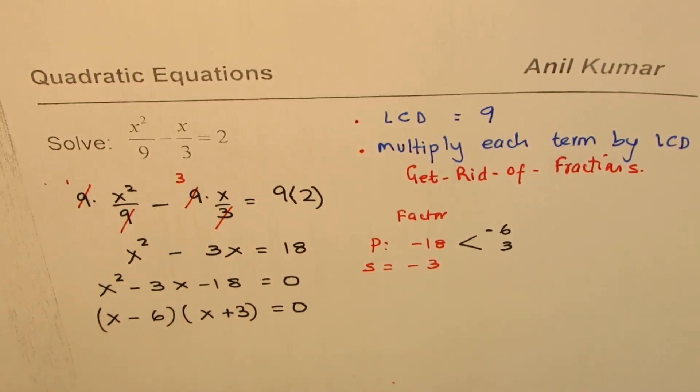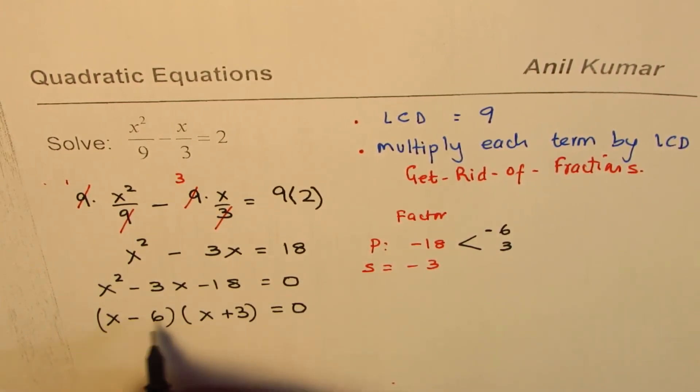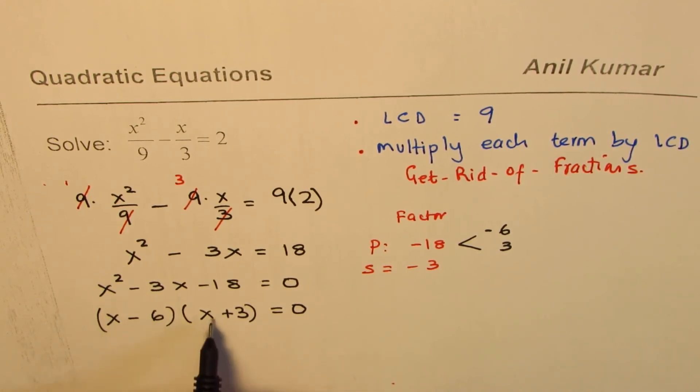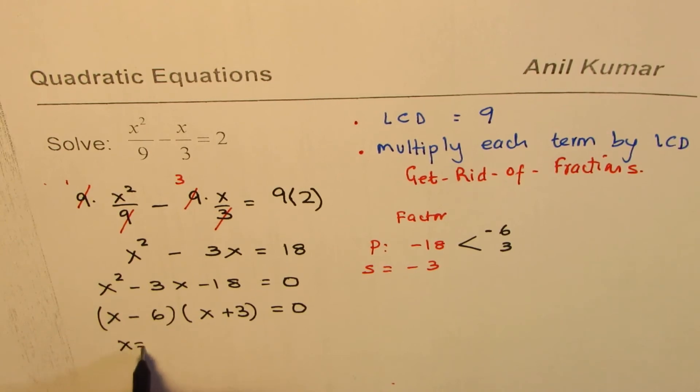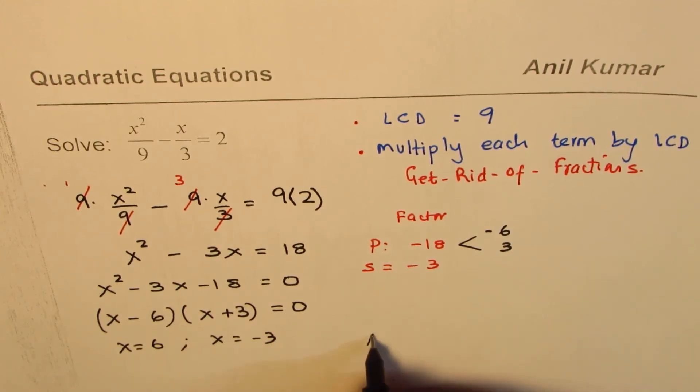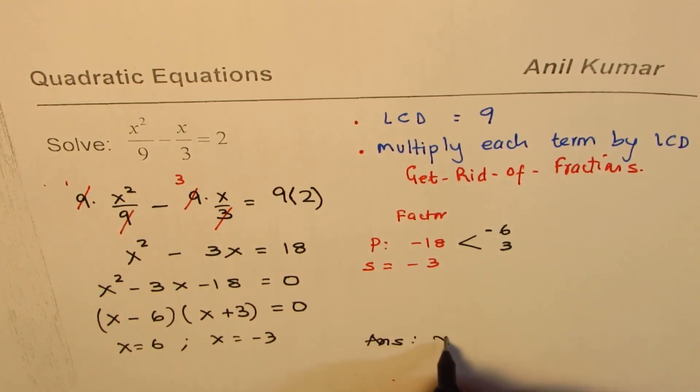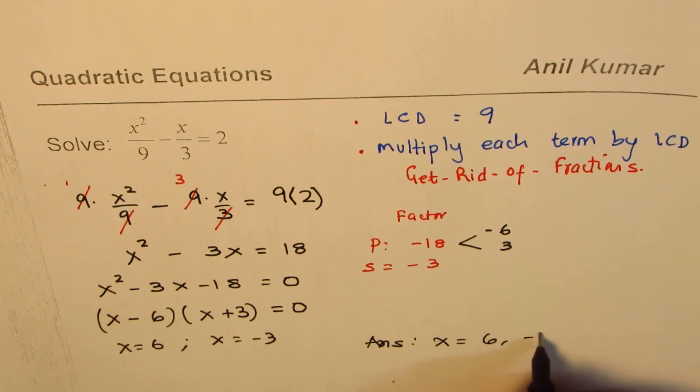So we get this factored form. And from here, you can write down the answer. These two factors, they can be 0. The first one, when x is equal to 6, the other one, when x equals to -3. So that becomes the solution of this equation. So we can write down the answer as x equals to 6 and -3. So these are the two solutions for the given equation.